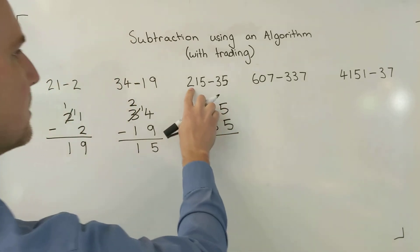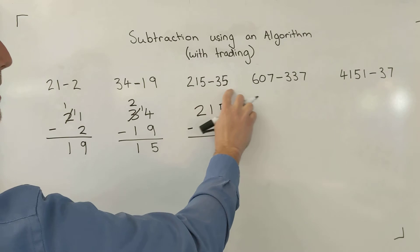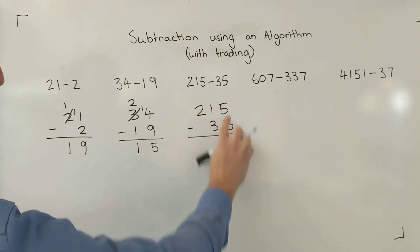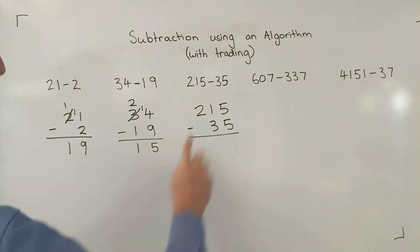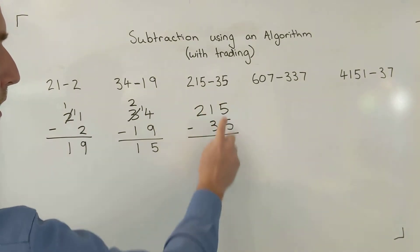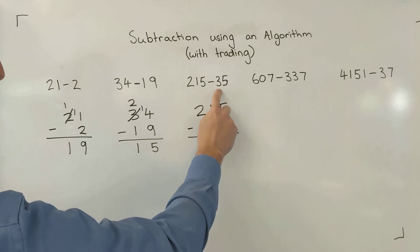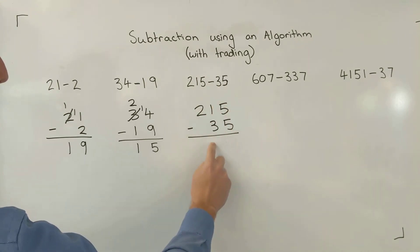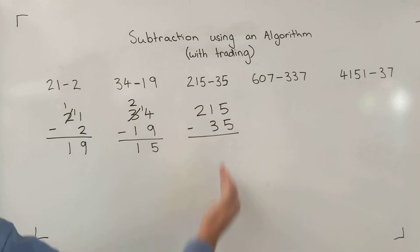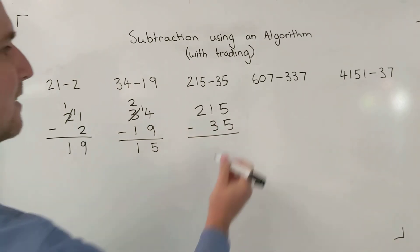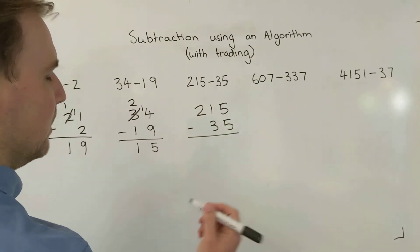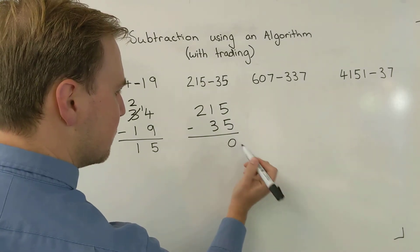Even though this is a three-digit number and this is a two-digit number, I've made sure I've kept my nice columns. The 5 in both numbers is in the ones column, the next one along is the tens column, and the one after that is the hundreds column — I've made sure they are in line. Now, 5 take away 5 — yes, I can do that, that leaves me with zero.